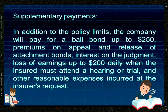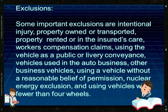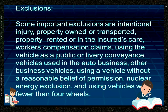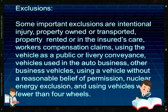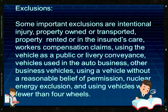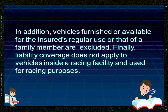Exclusions. Some important exclusions are: intentional injury, property owned or transported, property rented or in the insured's care, workers' compensation claims, using the vehicle as a public or livery conveyance, vehicles used in the auto business, other business vehicles, using a vehicle without a reasonable belief of permission, nuclear energy exclusion, using vehicles with fewer than four wheels, and vehicles furnished or available for the insured's regular use or that of a family member.